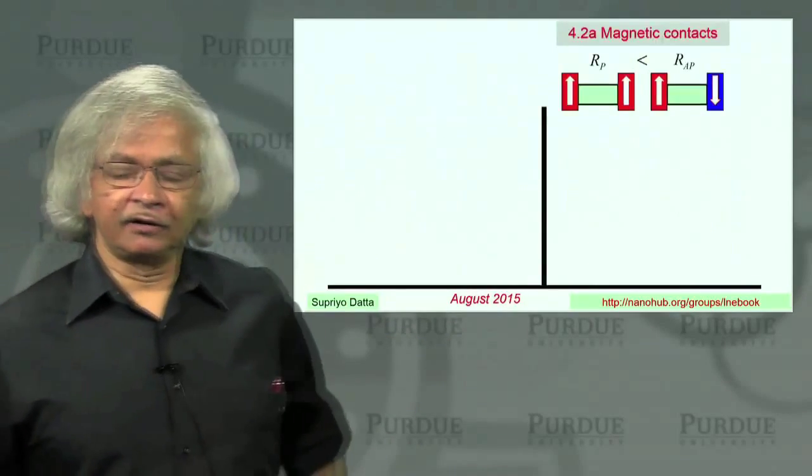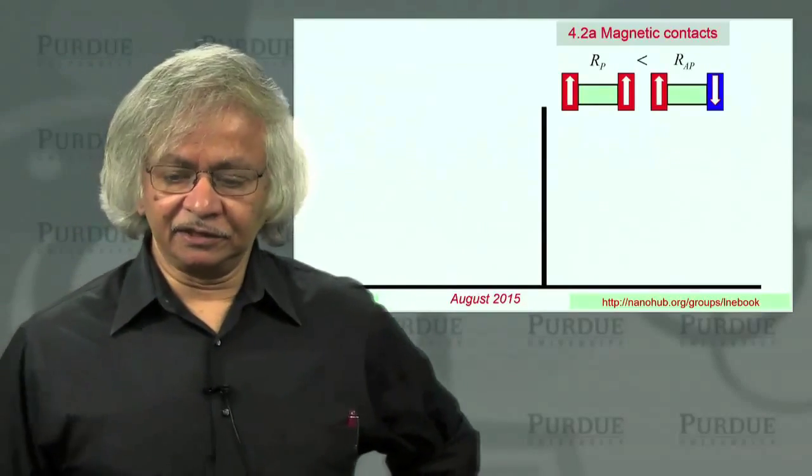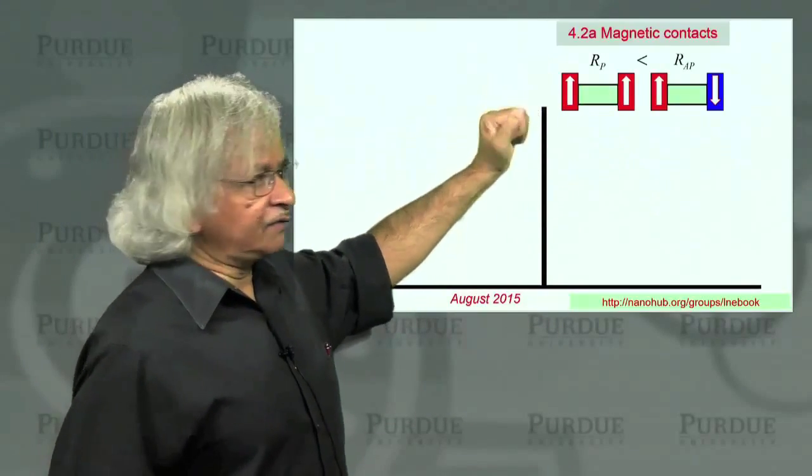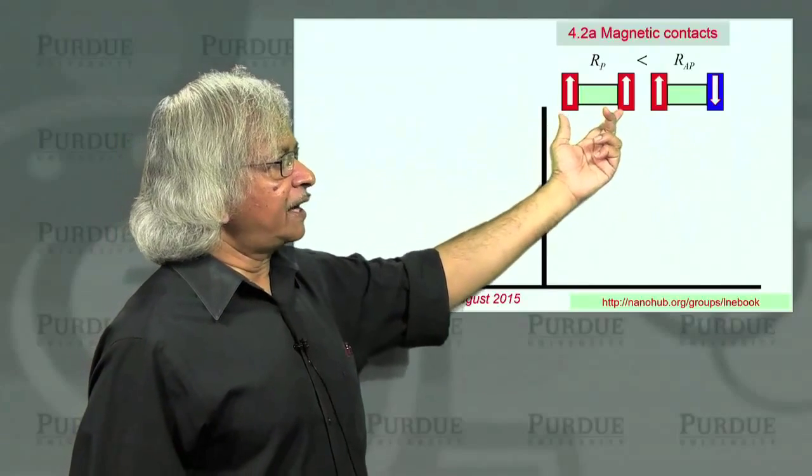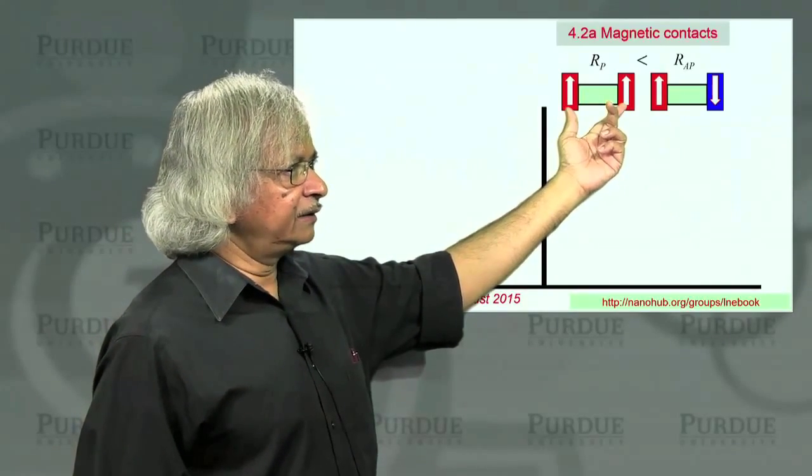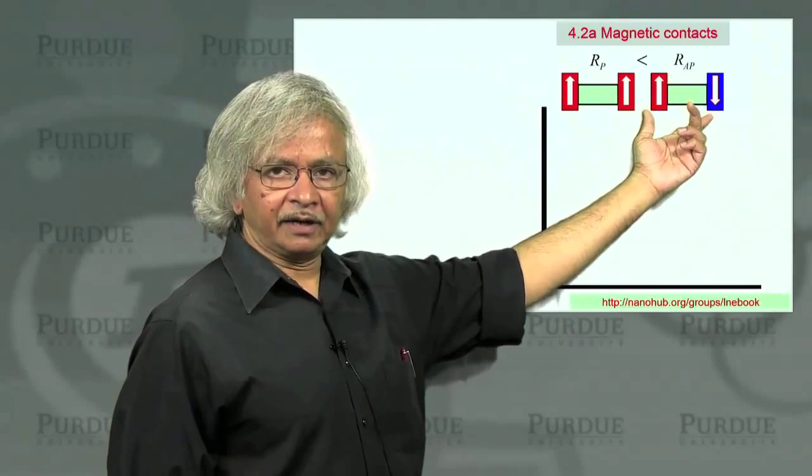Now as I mentioned in the introduction, a very important experimental result that actually started the field of Spintronics is the fact that if you had a device with two magnetic contacts that were parallel, the resistance is lower than if they're antiparallel.